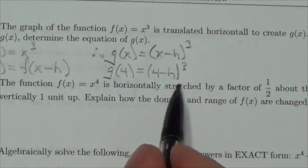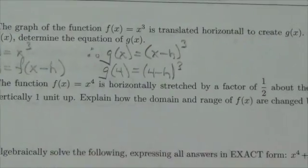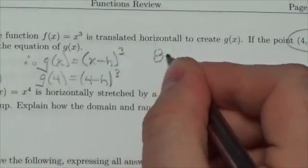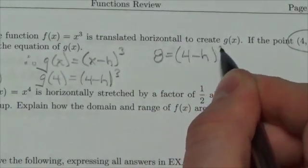Now, whatever you do, resist the temptation to want to cube that because I know that g of 4 is 8, because that's the point. That's the y-coordinate of the point. So, this will be 4 minus h cubed.